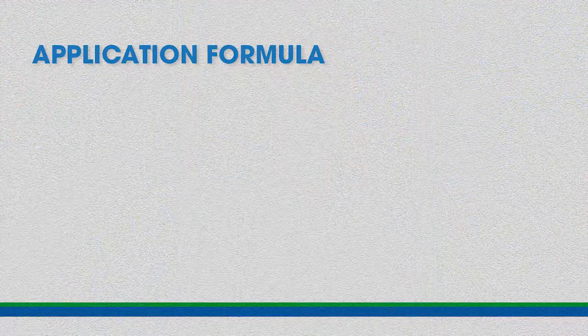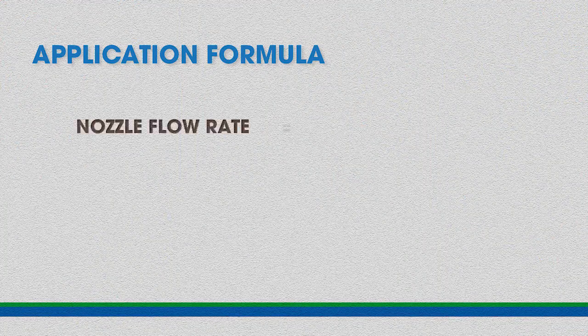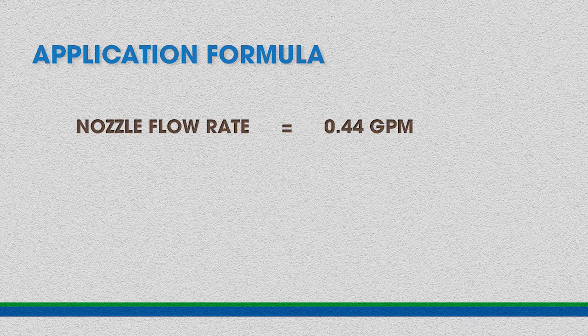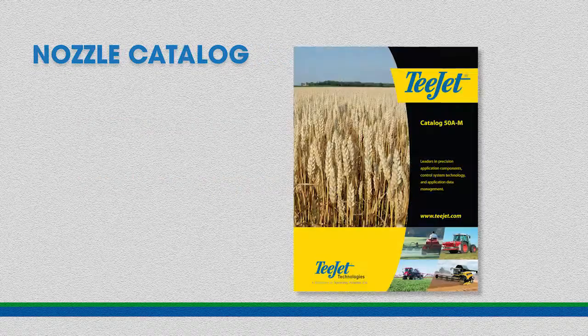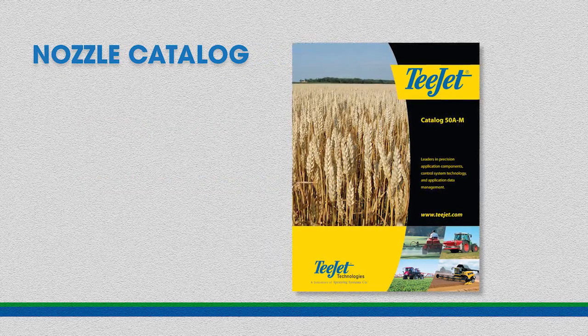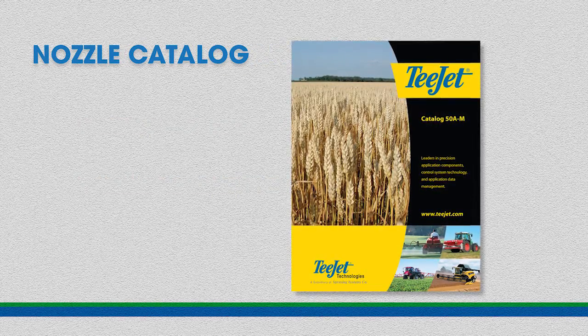Moving on to an example, we've decided to use Turbo T-Jet nozzle tips to make our application. We've just determined that we need a nozzle flow rate of 0.44 gallons per minute. In this example, let's say we are applying a fungicide, and the label has said that we'll get the best results using a medium droplet spectrum. So let's look at the nozzle catalog page for the Turbo T-Jet nozzle.